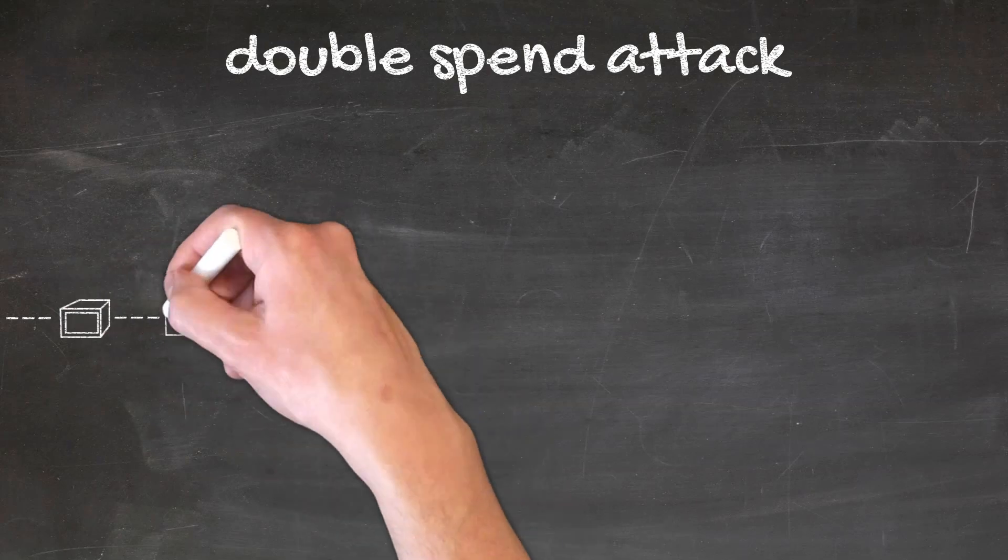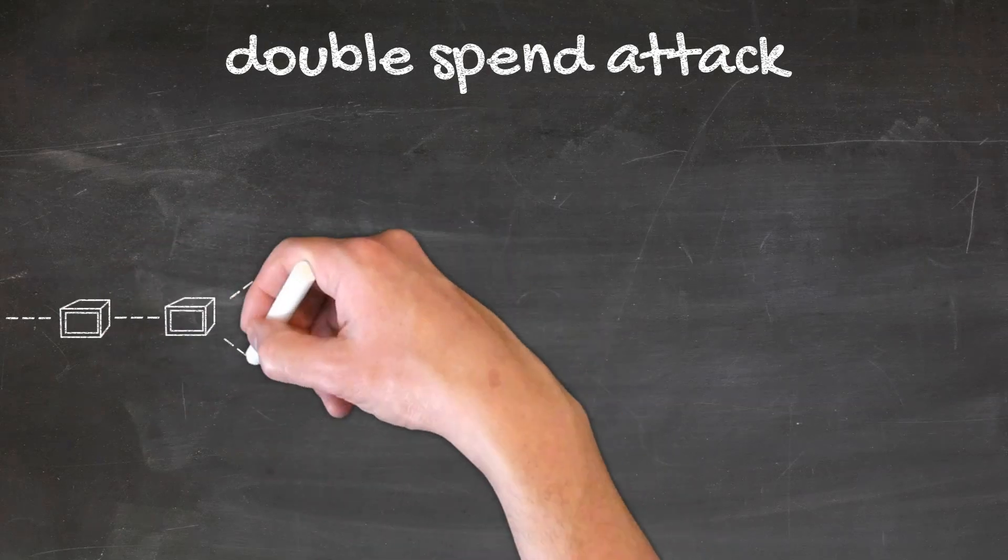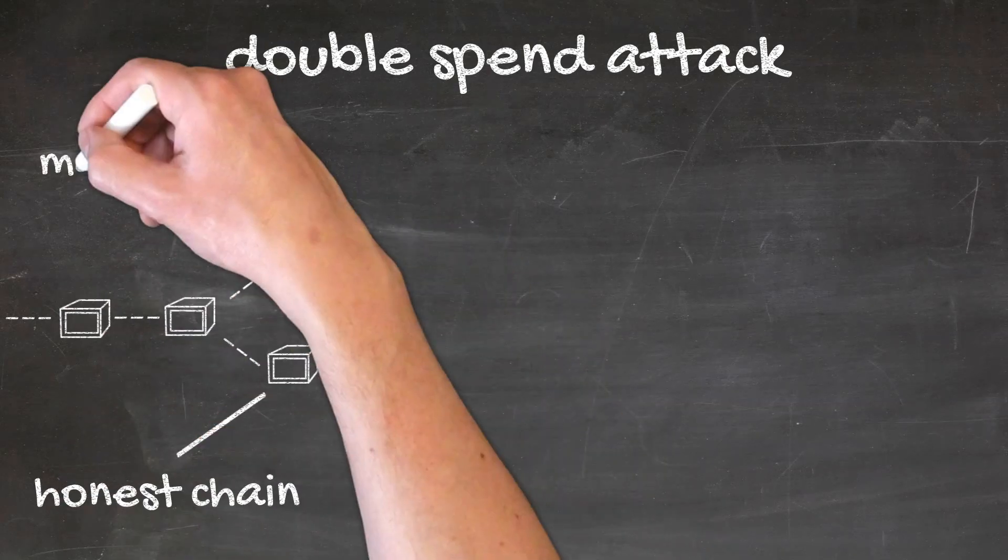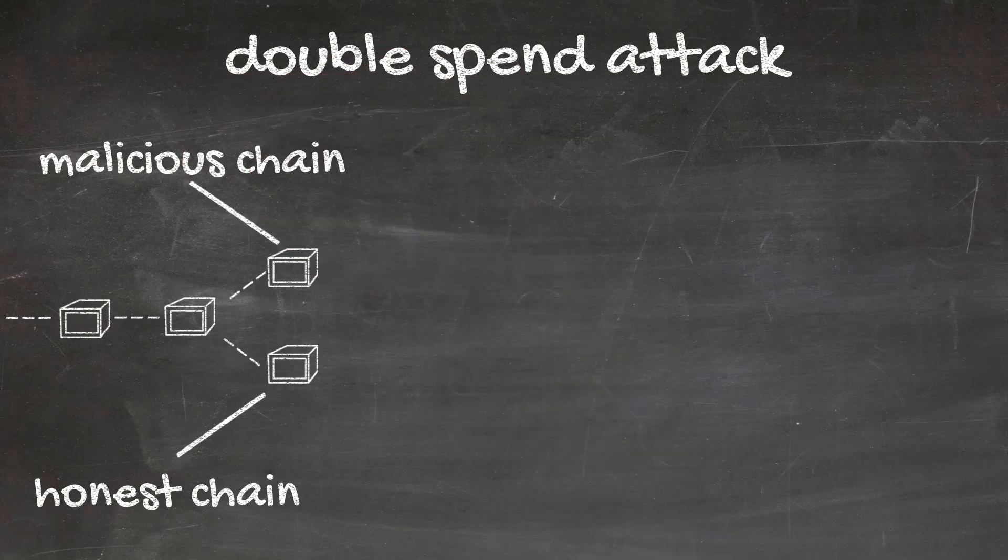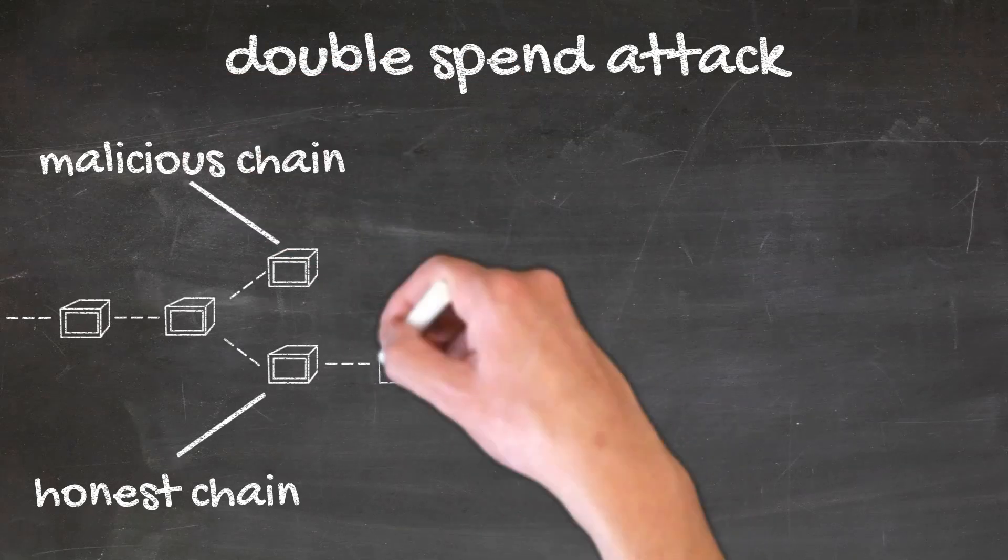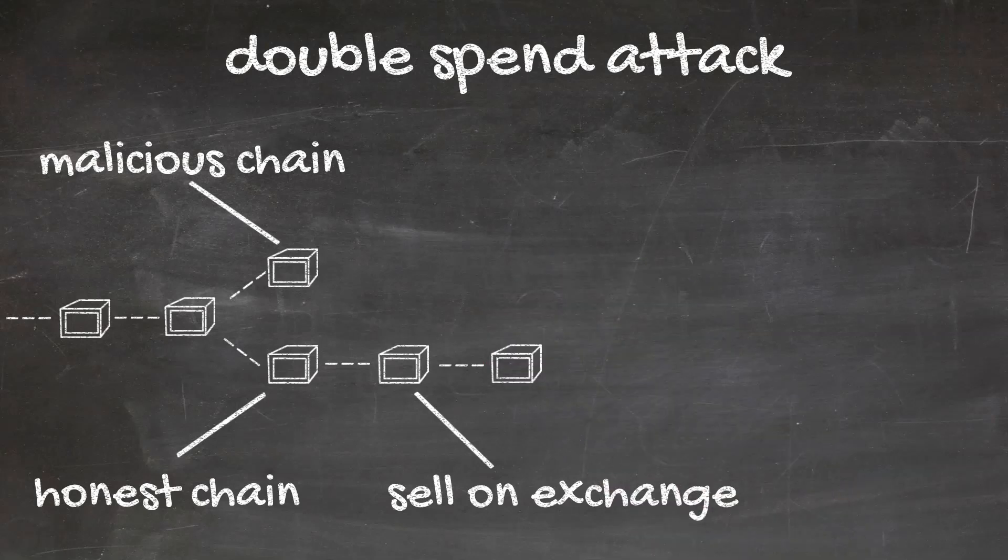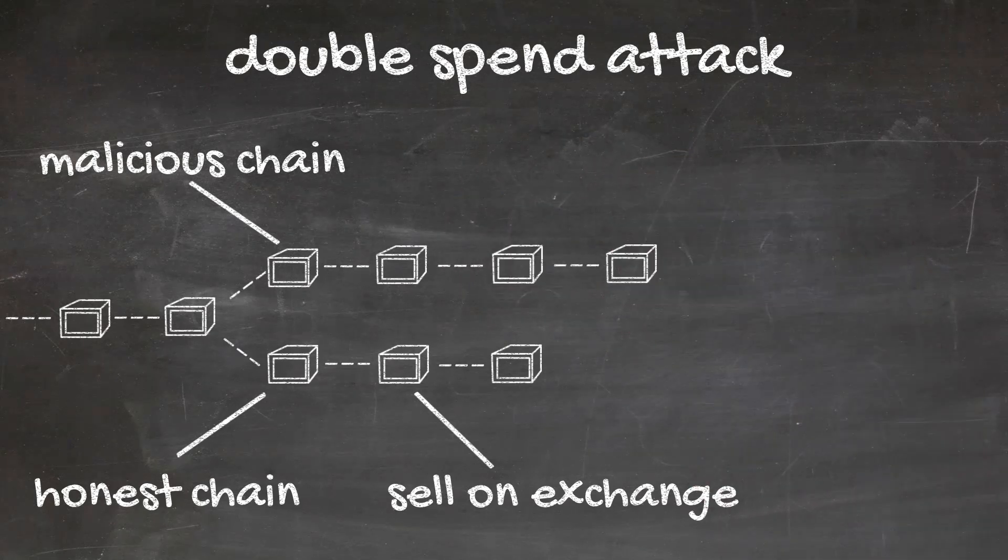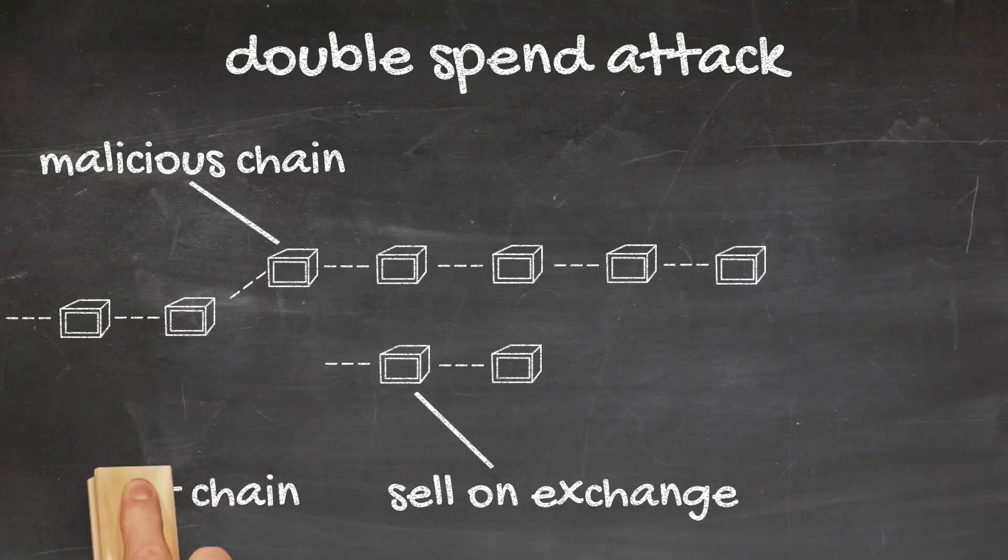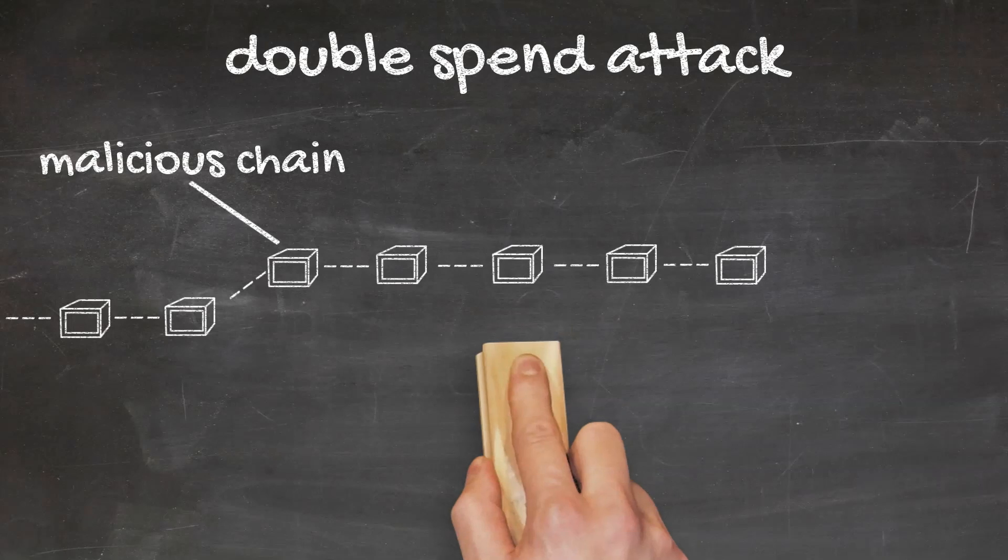Here is one example of what a double-spending attack might look like. The attacker forks the chain into an honest and a malicious chain. Then, he immediately spends the coins on the honest chain for fiat on an exchange. The attacker will then attempt to catch up with the blocks on the honest chain, and create the longest or densest chain. If the attack is successful, the network will select the malicious chain as the correct one, and the spent coins are placed back in the attacker's wallet.